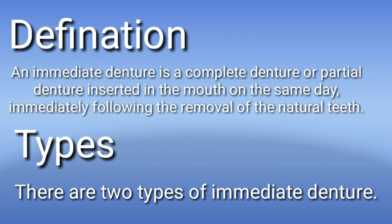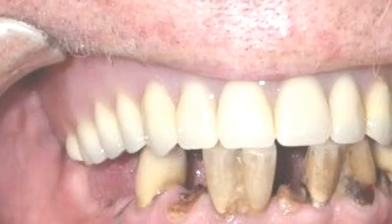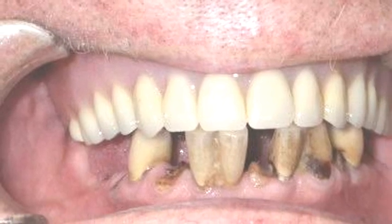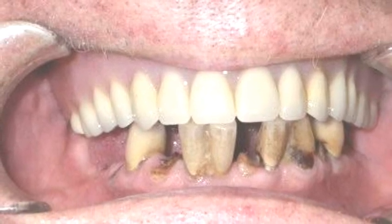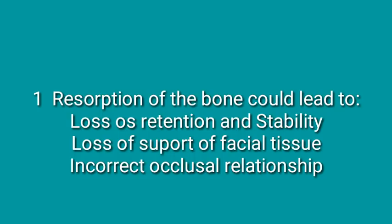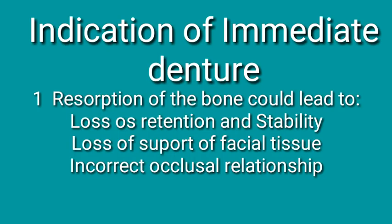Types of immediate denture. There are two types of immediate denture, which we will learn about in the next few minutes. You can see here the picture of an immediate denture. The name 'immediate denture' is because we can insert this denture on the same day.